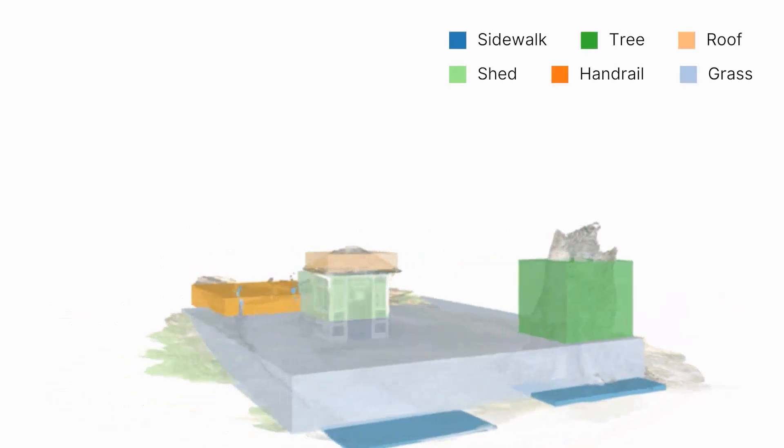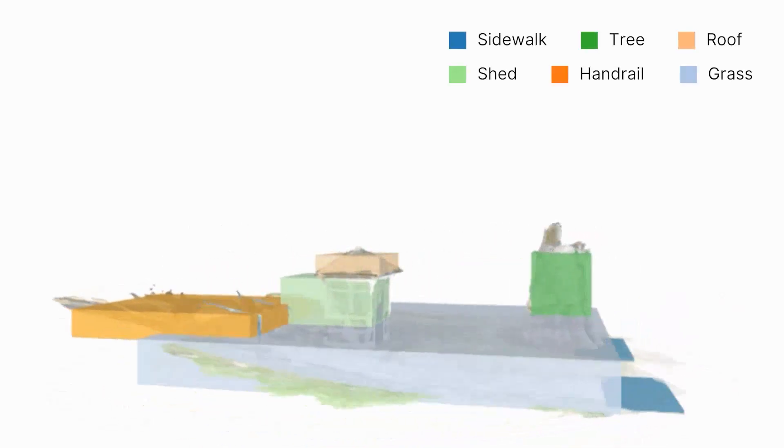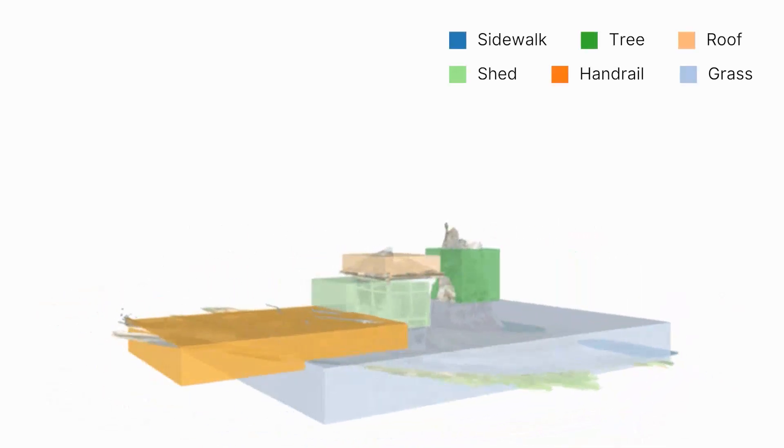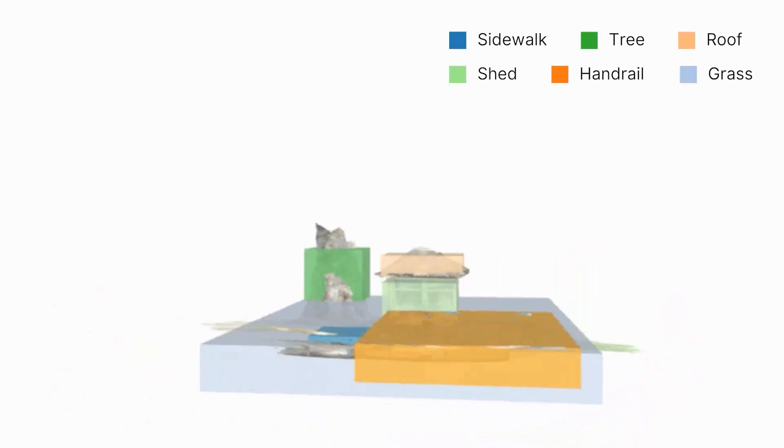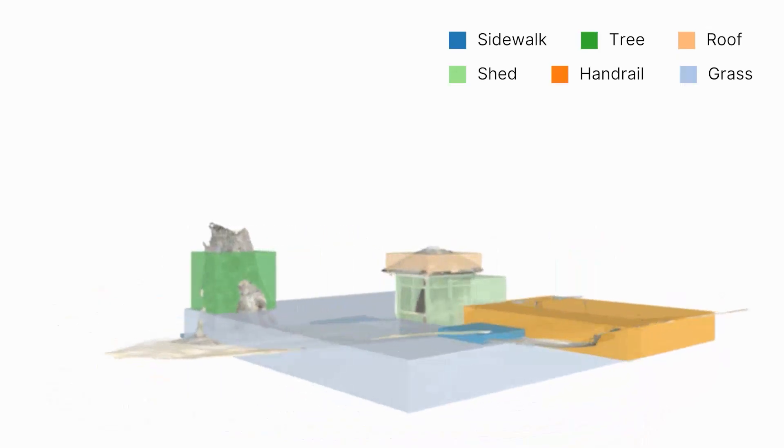Here's an example result. This park scene was processed offline in 13.5 minutes. Because our method uses point clouds, it can scale through existing datasets like Niantic VPS or Google Street View.